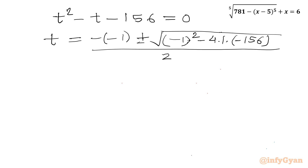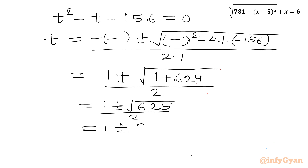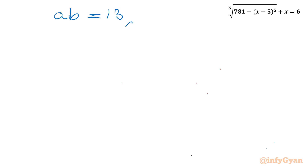So T equals (1 plus or minus square root of 625) divided by 2, which is (1 plus or minus 25) divided by 2. This gives T equals 26/2 equals 13, or T equals minus 24/2 equals minus 12. So the two values for T (which is AB) are 13 and minus 12.